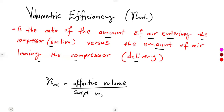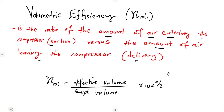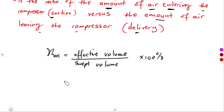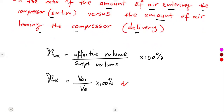So, if we consider this formula, it is direct. Here we are using the effective volume entering, which means the effective volume must be at the inlet. Therefore, we can have our volumetric efficiency as the effective volume at the inlet over the swept volume, which is our Vs. This is one of the formulas that we can use.